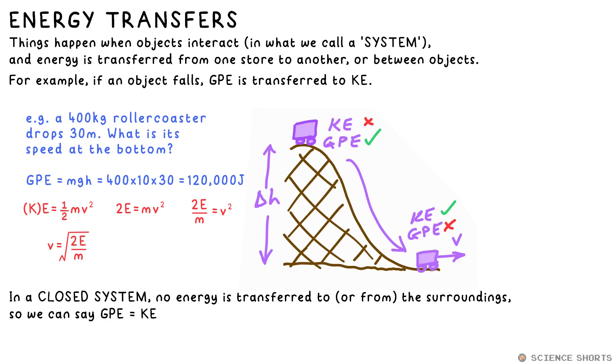Finally, to get rid of the square on the V, we square root the other side. So it turns out V is equal to the square root of 2 times the kinetic energy divided by the mass. Then we just pop in our numbers, punch it into our calculator, and boom, we've got our answer.